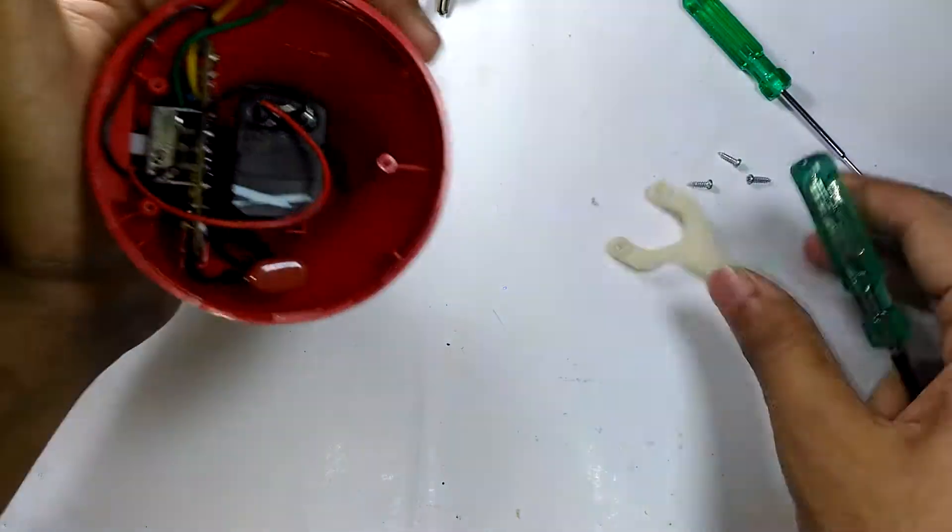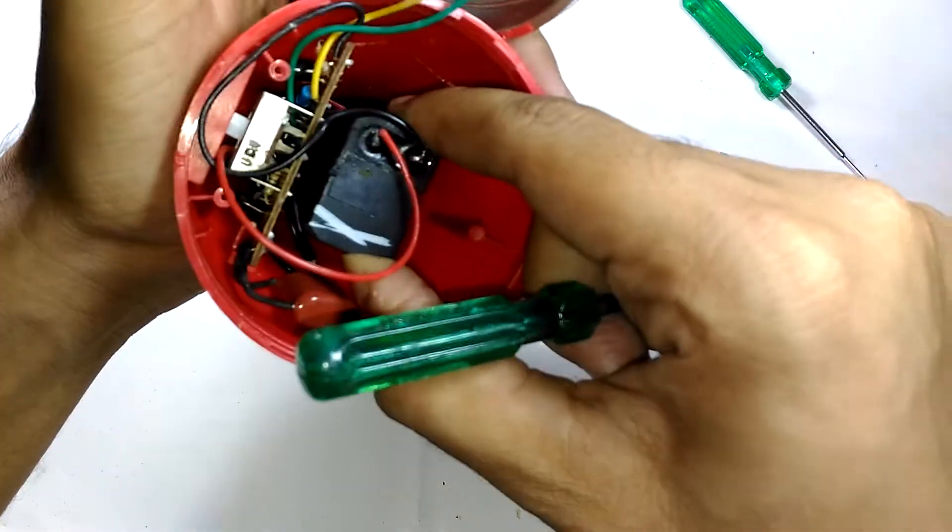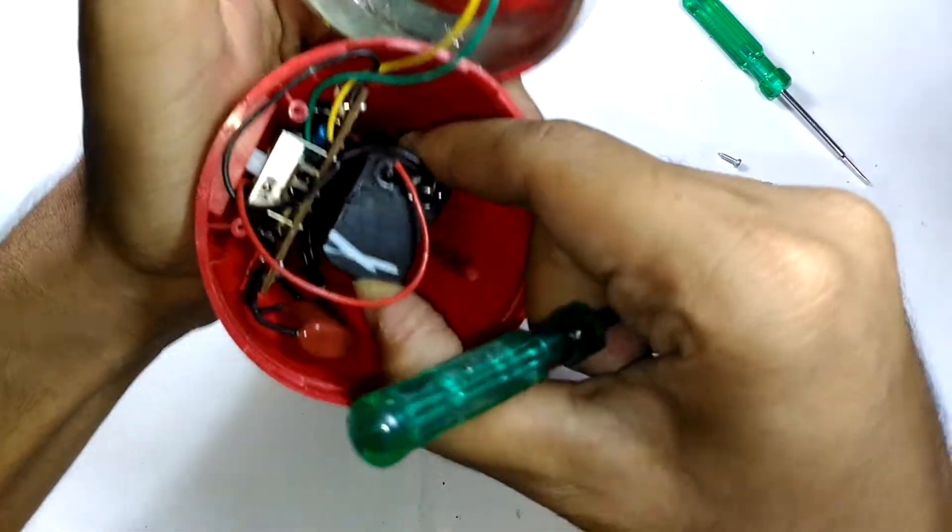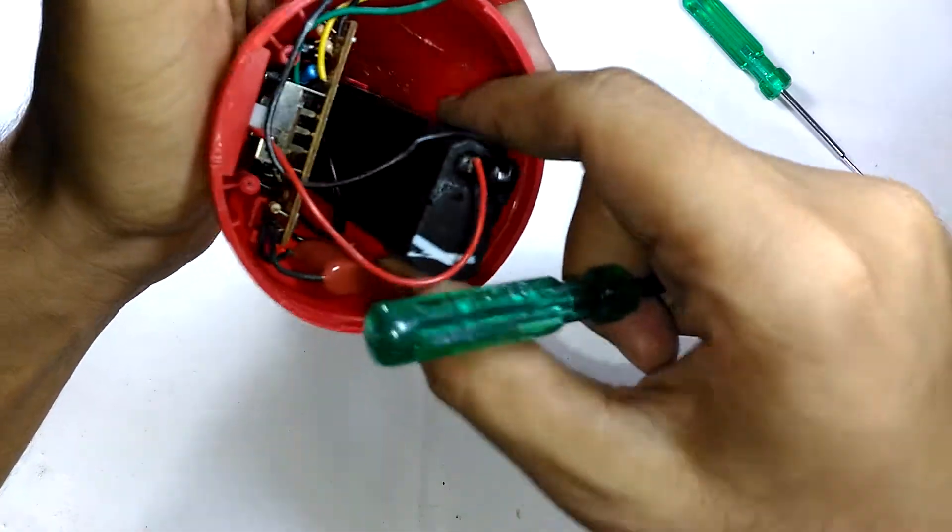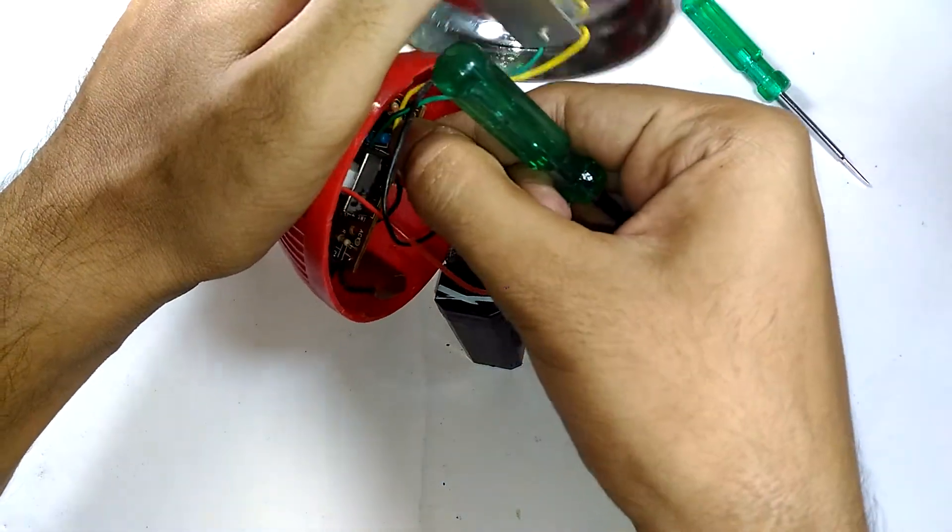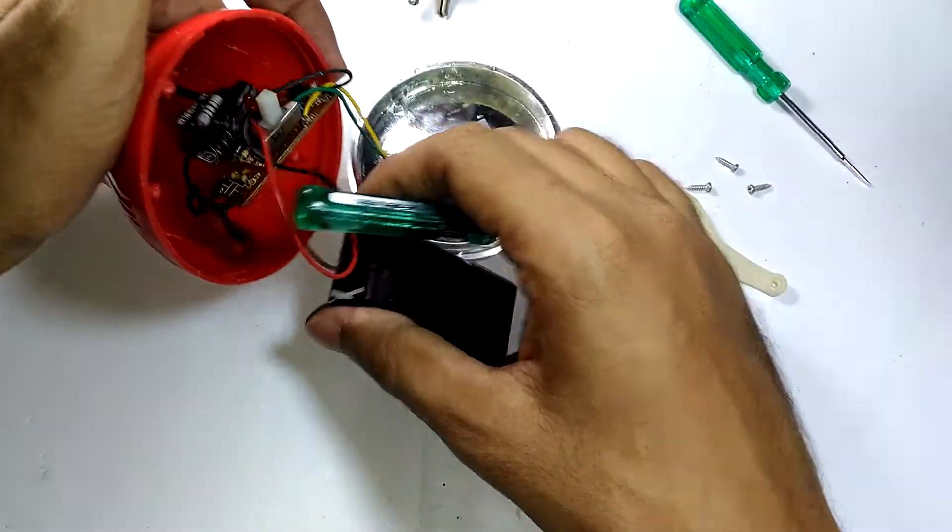This thing is probably here to support the battery, so it's not glued. The circuit just comes right out.